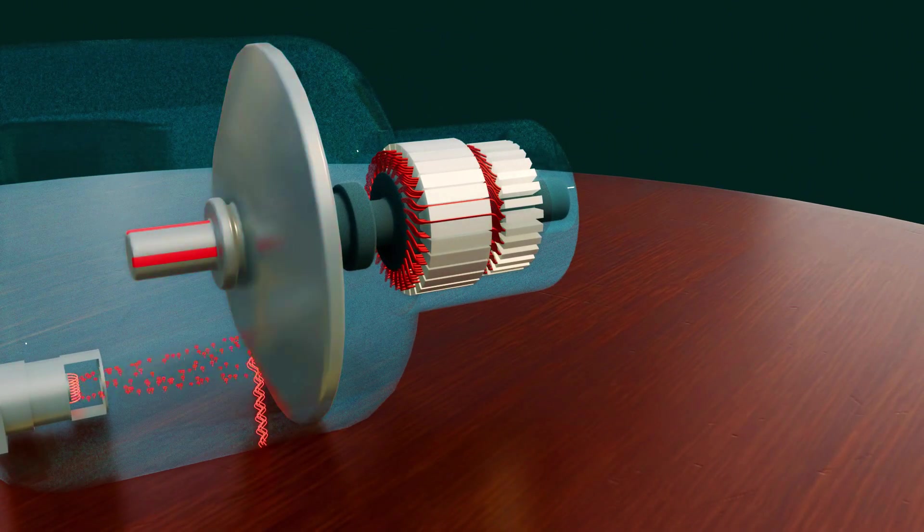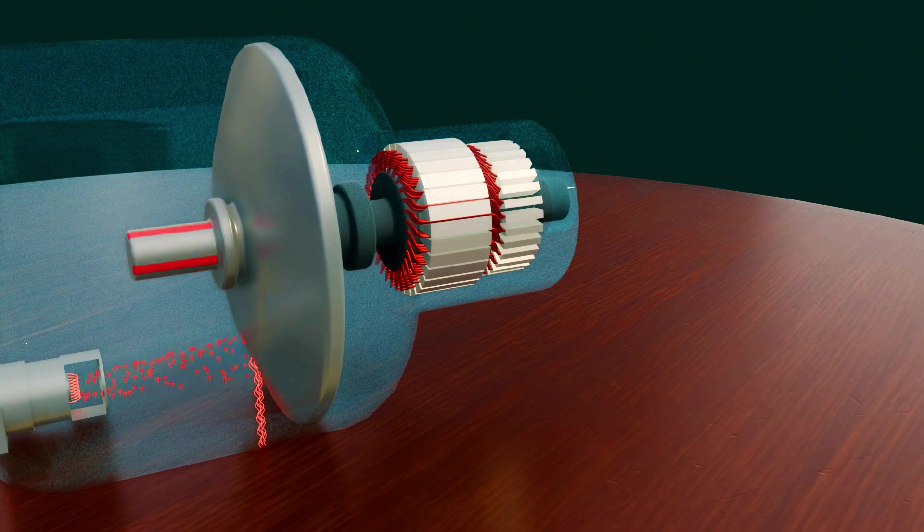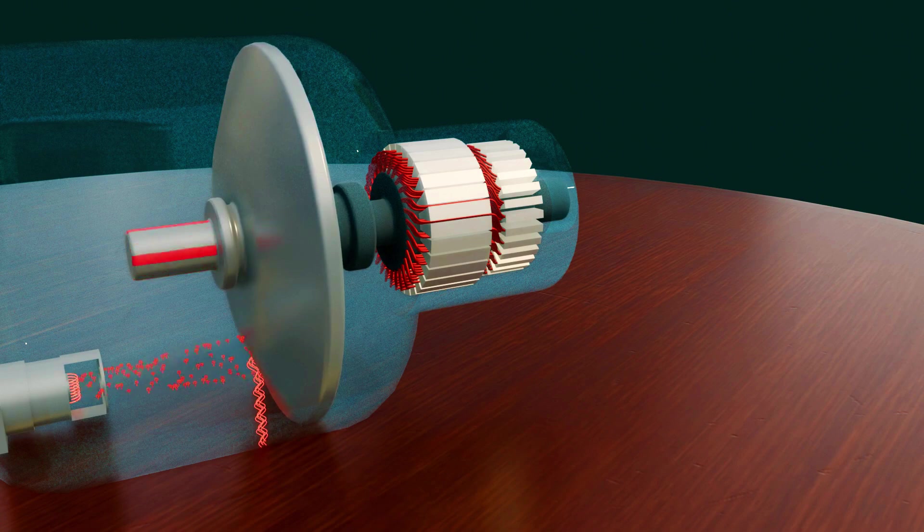As the anode rotates, the heat generated spreads across the entire surface of the disc, helping to dissipate the heat to some extent. However, this alone is not sufficient to fully control the heat.